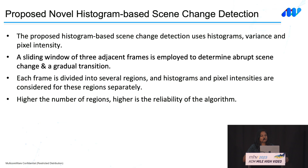The key improvements over the existing histogram-based algorithm are: instead of just using the histogram of the frame, we also compute pixel intensity and variance. We use a sliding window of three frames — current, future, and past — to eliminate false detections of scene transitions as scene cuts. Another important aspect is dividing the frame into nine regions and computing region-level values. Higher numbers of regions increase reliability, but also increase computation. Through experimentation, for 1080p sequences, the optimum number of regions was found to be nine.